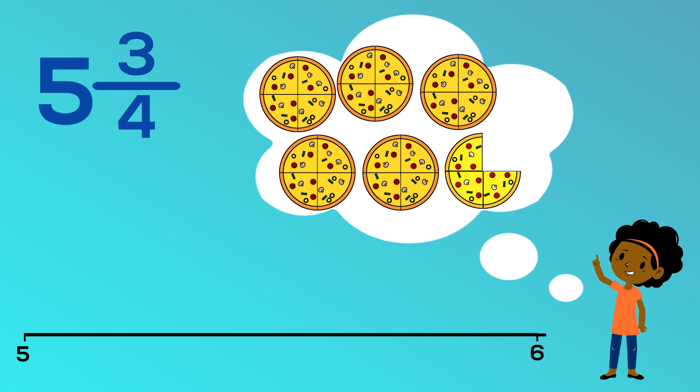Now let's divide the whole that is between five and six into four equal parts, because we can see that the fraction in our mixed number is in quarters. Each one of these new spaces we have made is one fourth or one quarter. This mixed number has three quarters. Let's count along the quarters we have made. Five and one quarter, five and two quarters, five and three quarters.